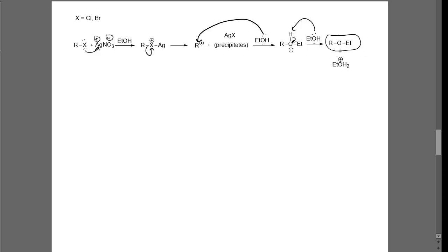This is not the end because we still have a positive charge — a relatively unstable compound. Additional ethanol in solution can then deprotonate that to form our final product, in this case our ether in solution, as well as our byproduct. As this reaction goes, we're going to have more and more acid byproduct as the reaction continues.